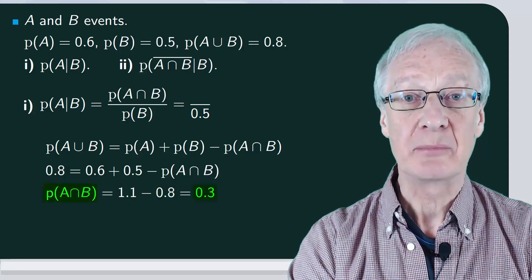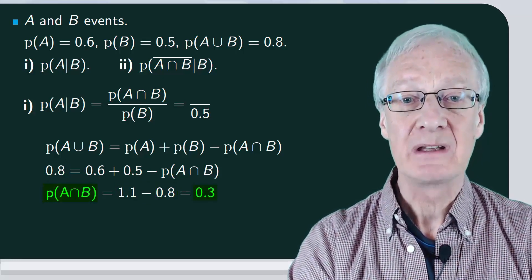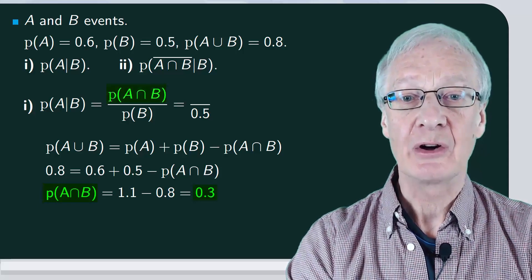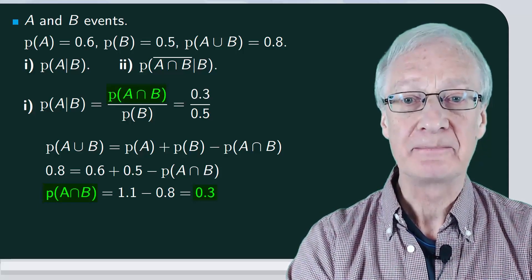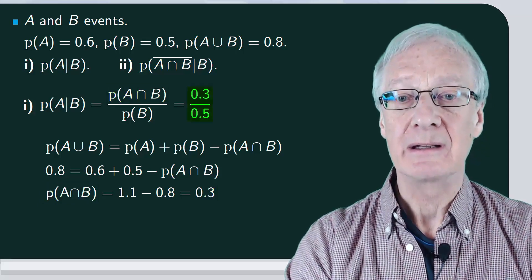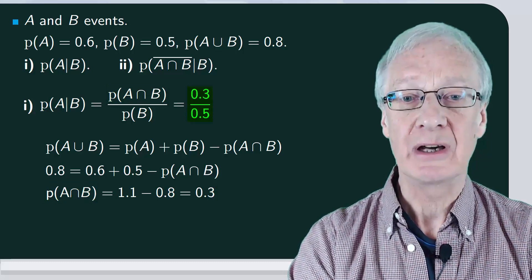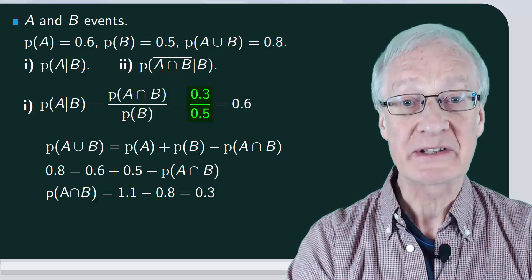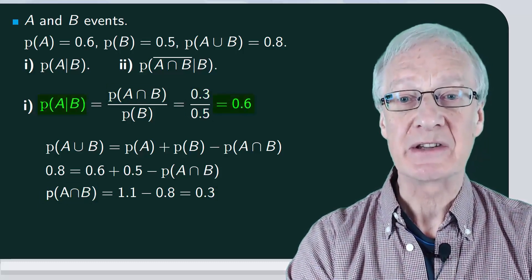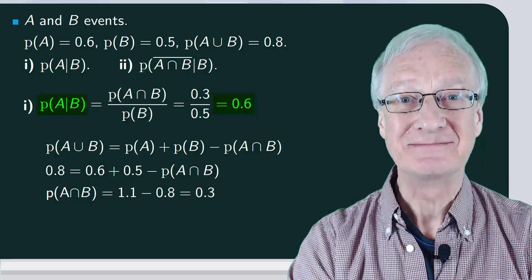The result is 0.3, which is the probability of A intersection B. We substitute this on top, then divide 0.3 by 0.5, to give 0.6, and this is the probability of A conditional on B.